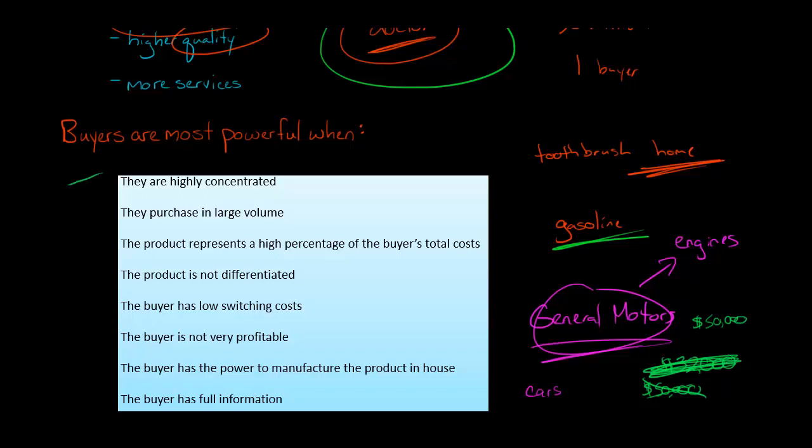So one or more of these factors, when they're present, the buyers are going to have a lot more power in terms of negotiating a lower price or demanding higher quality product or services.